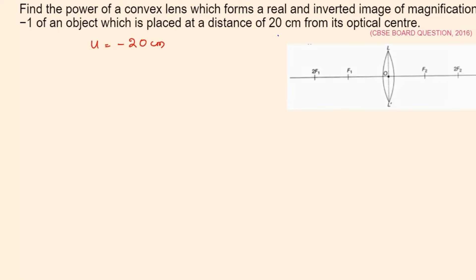Why minus? Because to measure the object distance I have to go towards the left from the optical center. If we have to measure any distance going towards the left from the optical center the sign convention would be negative, and if we have to find any distance towards the right then the sign would be positive. So here the object is situated to the left of the optical center, so it is negative.